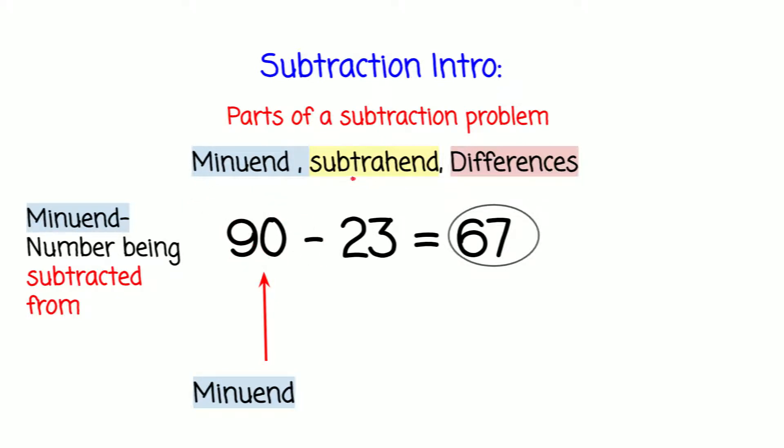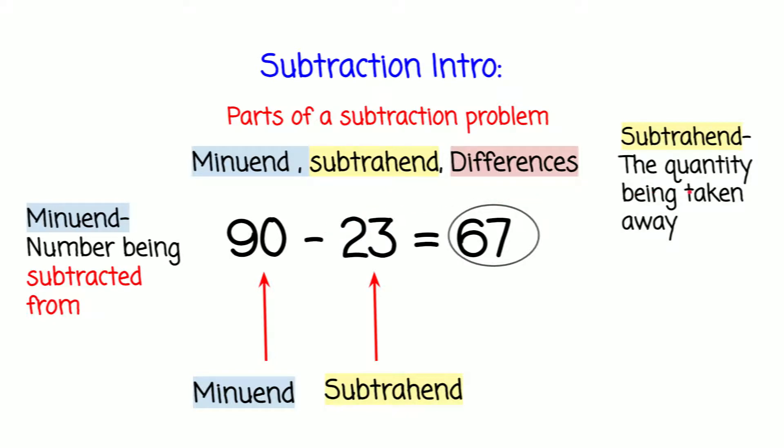Let's see what subtrahend is. Subtrahend is the 23. Let's see what the definition is. The definition is the quantity being taken away from the minuend.